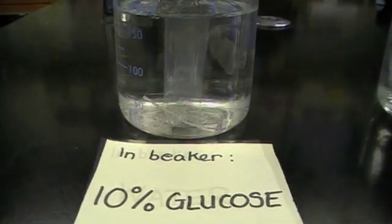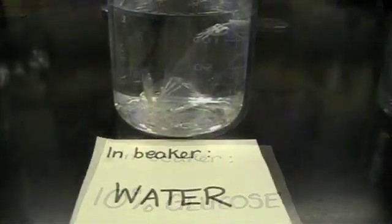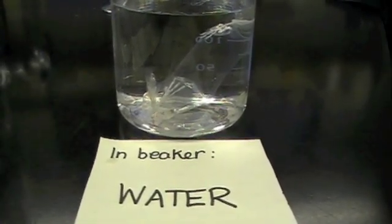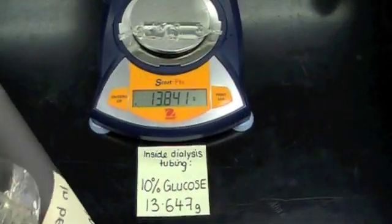Osmosis is the movement of water from an area of high water potential to one of low water potential across a semi-permeable membrane. We should be seeing if the mass of these tubes varies once they've been left in their beakers.